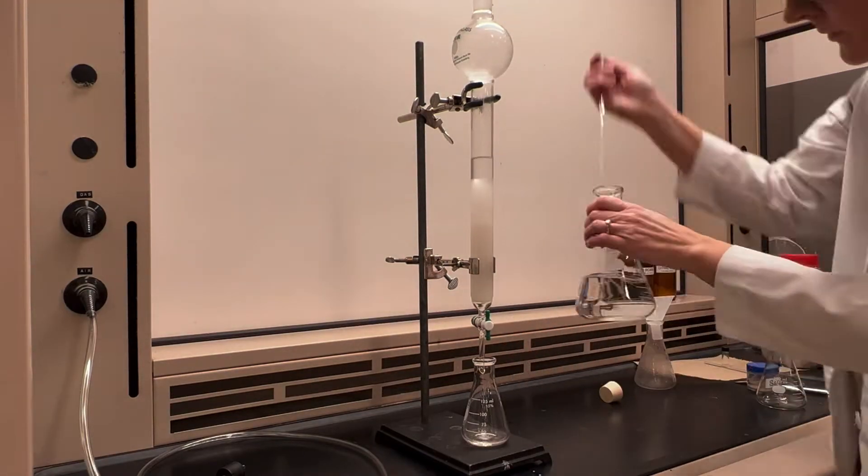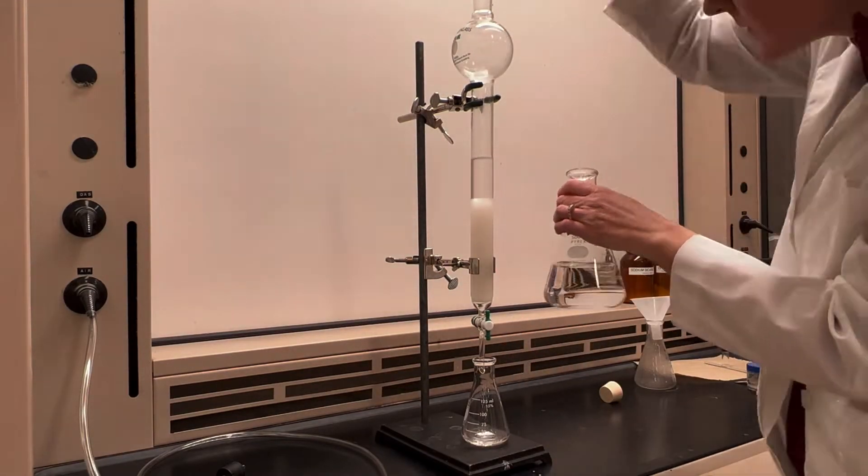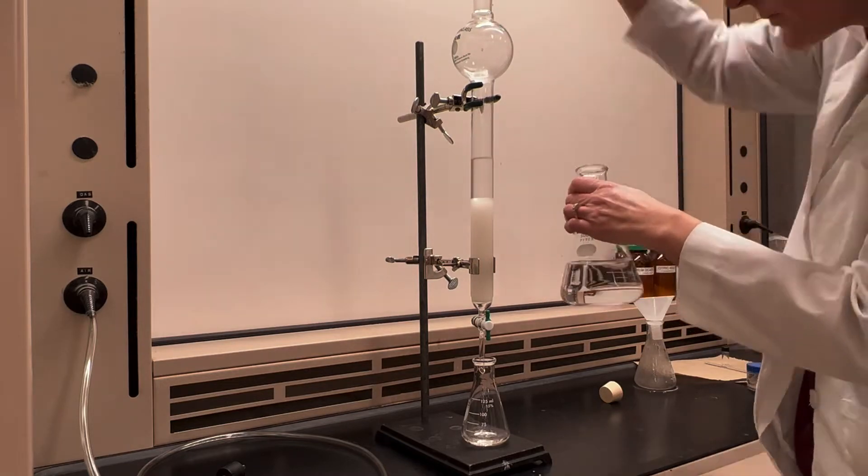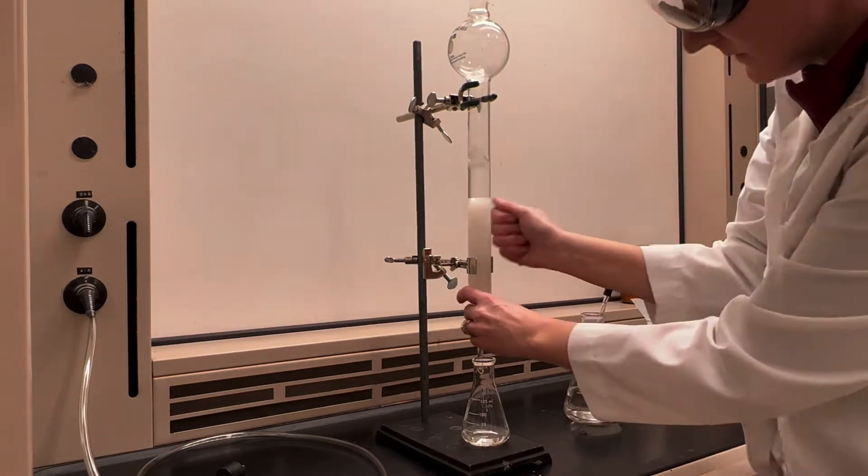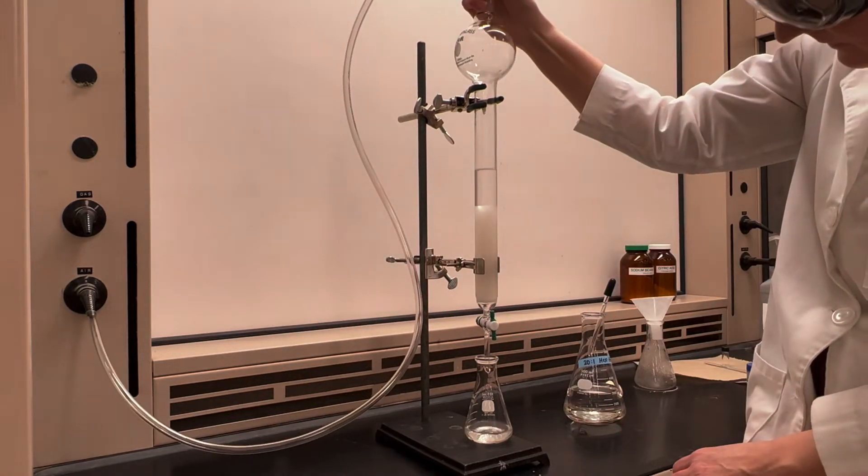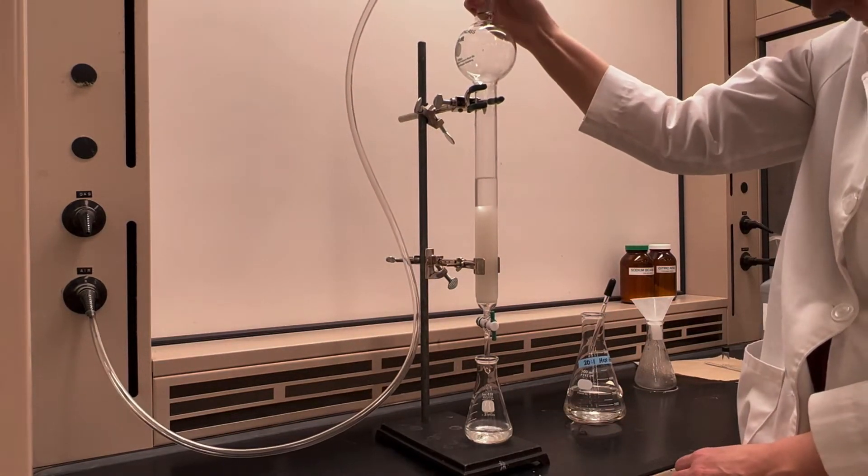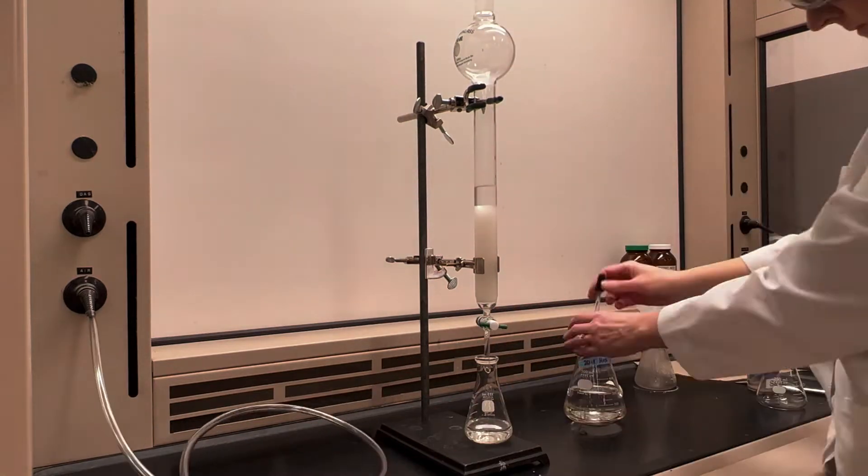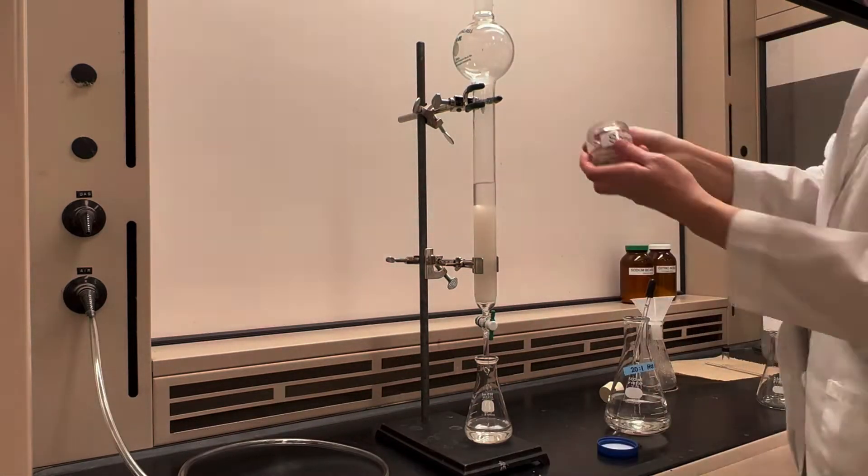Then add that slurry to the column, give it a rinse, and then use a pipette to rinse the silica gel down off the sides. You want to jostle the column to get rid of air bubbles, and then use air pressure to push the solvent down through the column and to pack it.